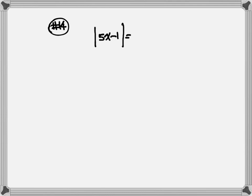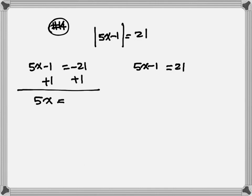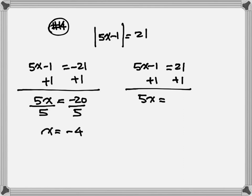Number 14: absolute value of 5x minus 1 equals 21. Step one: separate into two equations. Step two: equation on the left equals negative 21; equation on the right equals positive 21. Step three: 5x minus 1 goes to the left-hand side of each equation. Left side: plus 1 on both sides gives 5x equals negative 20, divide by 5, x equals negative 4. Right side: plus 1 gives 5x equals 22, divide by 5, x equals 22 over 5.